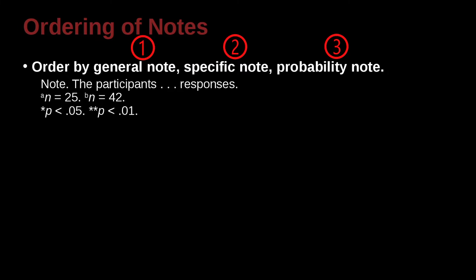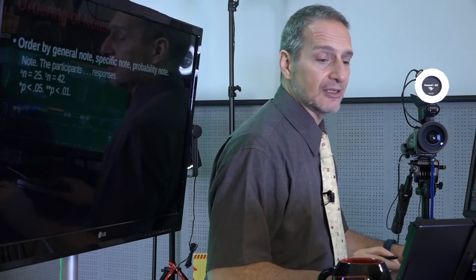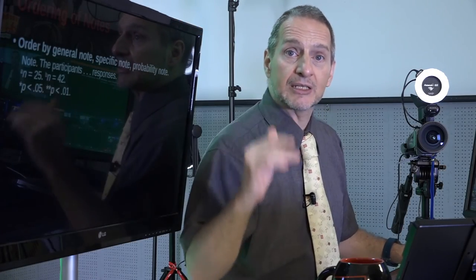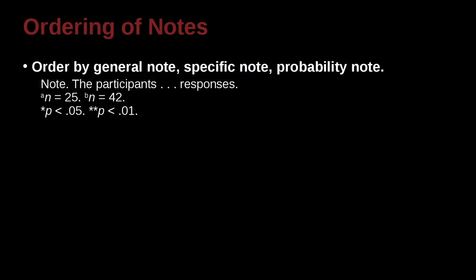So they would look something like this. A general note, and then a specific note, and then your probability note. So that's keeping it nice and simple. And you can see that very quickly. If you look at a table, you look at the notes, you look at the bottom of the notes, you can see the p-values, the probability values, because they go last.